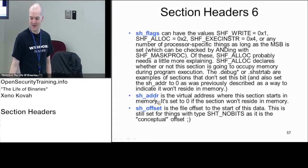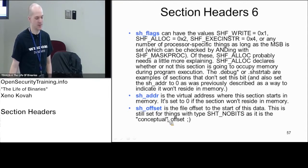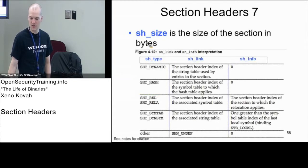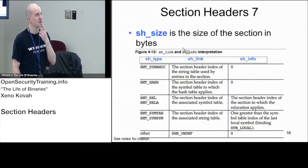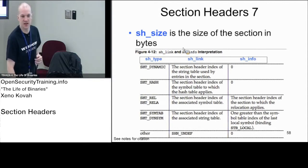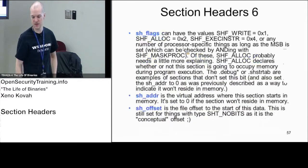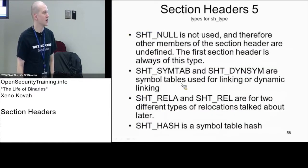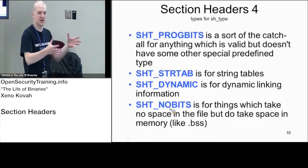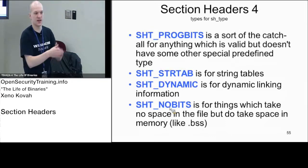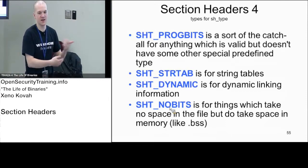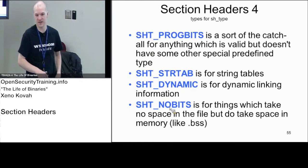sh_addr is the virtual address where the section starts if it gets mapped into memory. sh_offset is the file offset. sh_size is the section size in bytes. This is similar to the debug information in PE files where you had a memory address, a file address, and a single size field meaning the two cannot differ. For a BSS section with type NOBITS, the size field still reflects the total BSS size, but it won't be used as file size because its type is NOBITS.